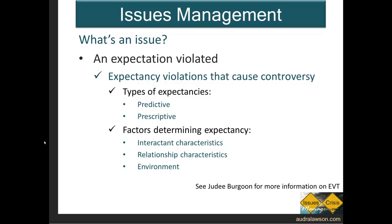Expectancies in people are really determined by three factors. First are interactant characteristics. This really asks the question between an organization and a person — who is it that we're dealing with? With people, things like age, sex, culture, and personality traits create an expectation of a behavior. Likewise, with organizations, we see that different industries and different types of organizations create these kinds of interactant assumptions or characteristics.